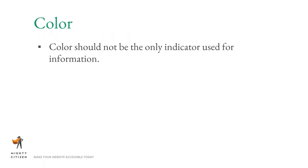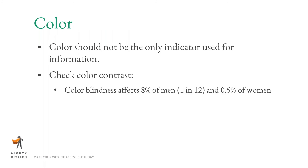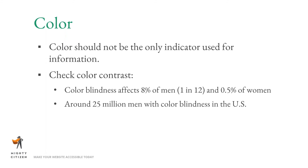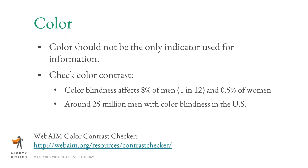Color should not be the only indicator used for information on your website. You want to check color contrast because color blindness affects 8% of men — 1 in 12 — and 0.5% of women; there are around 25 million men in the U.S. with color blindness. Make sure colors have enough contrast difference so people can tell them apart even if they can't distinguish the specific colors. The WebAIM color contrast checker is a fast free tool — you put in two color values and it tells you whether they meet the contrast guidelines.